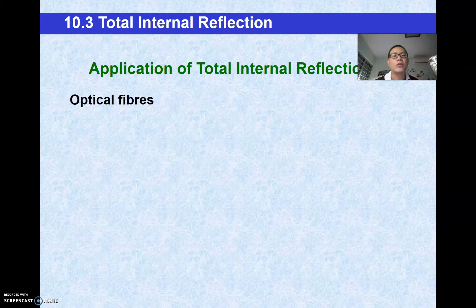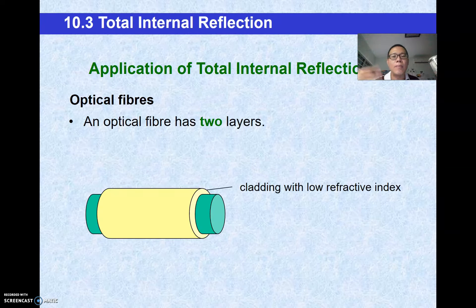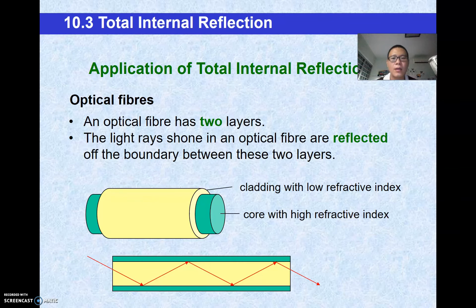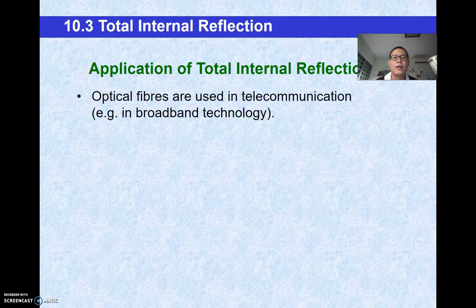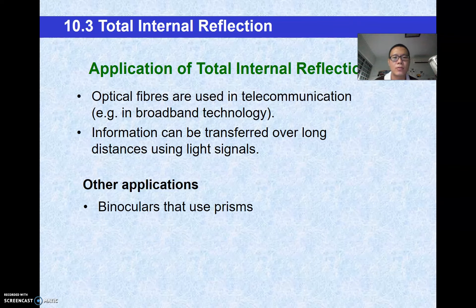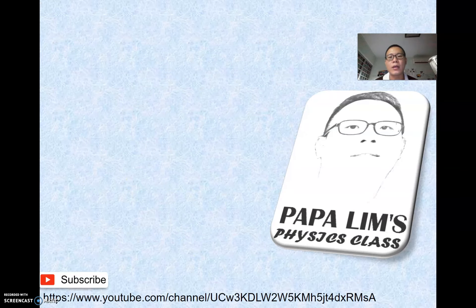The application of total internal reflection nowadays is quite common — for example, optical fibers, whereby light keeps bouncing along, and we apply total internal reflection to it. I'll leave the other applications for you to read up. Just take note of what we've gone through: the condition for critical angle and what we are dealing with in total internal reflection.